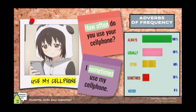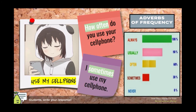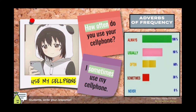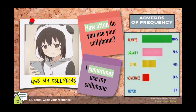Now let's take a look at the examples. 'Use my cell phone' is the vocabulary. Whenever I ask 'how often,' I'm asking about frequency. How often do you use your cell phone? I sometimes use my cell phone. It means that this person only uses the cell phone 30% of the time.